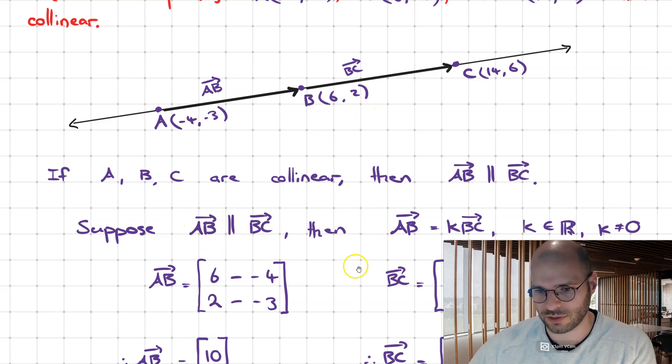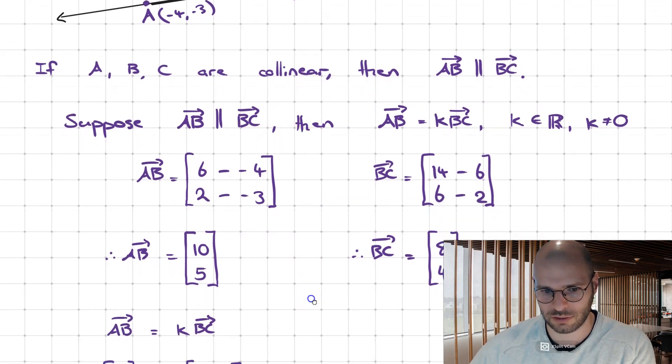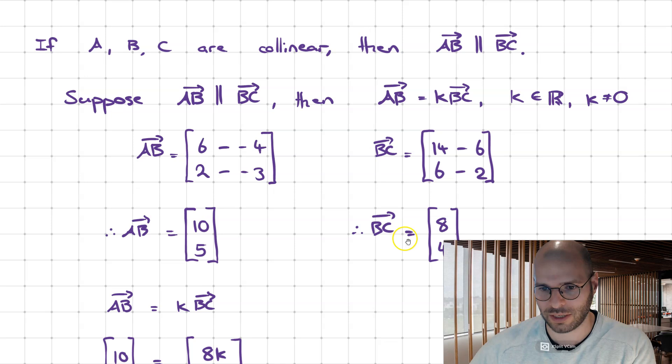From there, we build our parallel statement and then we go through a parallel demonstration. We define vectors AB and BC.